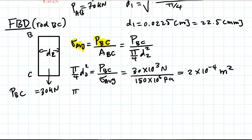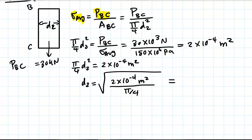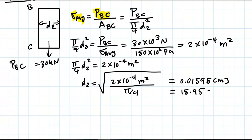So π/4 × D₂² = 2 × 10⁻⁴ meters squared. Solving for D₂ by taking the square root gives us D₂ = 0.01595 meter, or approximately 15.95 millimeters.